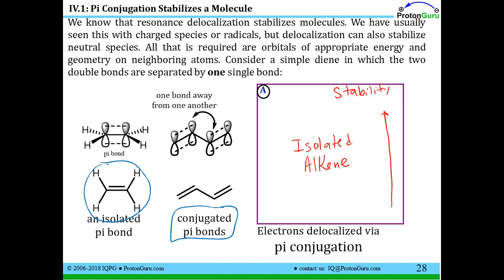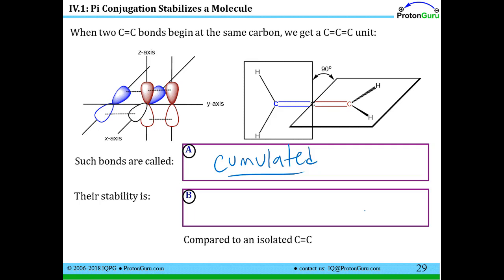The delocalization of electrons in a system by resonance makes the system more stable from the delocalization energy we talked about when we learned about resonance in the first place. So we can place the pi conjugated double bonds at a greater stability than the isolated alkenes. This is in sharp contrast to the accumulated alkenes where we can't have any delocalization. And these accumulated alkenes are less stable compared to isolated C=C bonds.